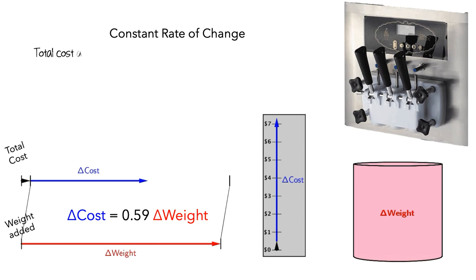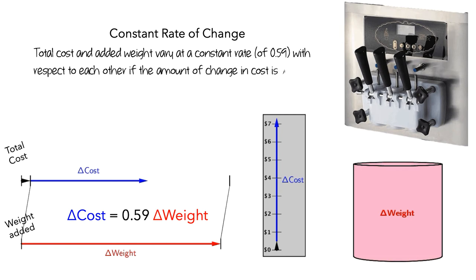In this scenario, total cost and added weight vary at a constant rate of 0.59 with respect to each other, if the amount of change in cost is always 0.59 times as large as the amount of change in weight.